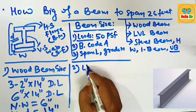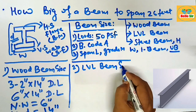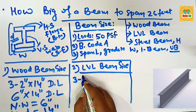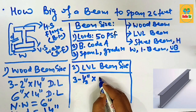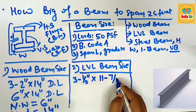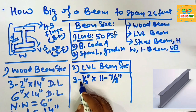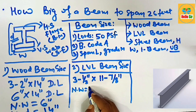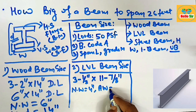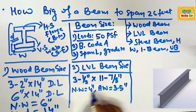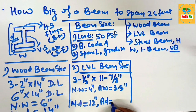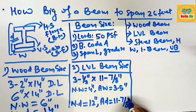For the LVL beam size required to span 26 feet, you should take a double-ply of 3.5-inch width and 11-7/8-inch deep LVL beam. The nominal width of this beam is 4 inches and the actual width is 3.5 inches. The nominal depth is about 12 inches and the actual depth is 11-7/8 inches.